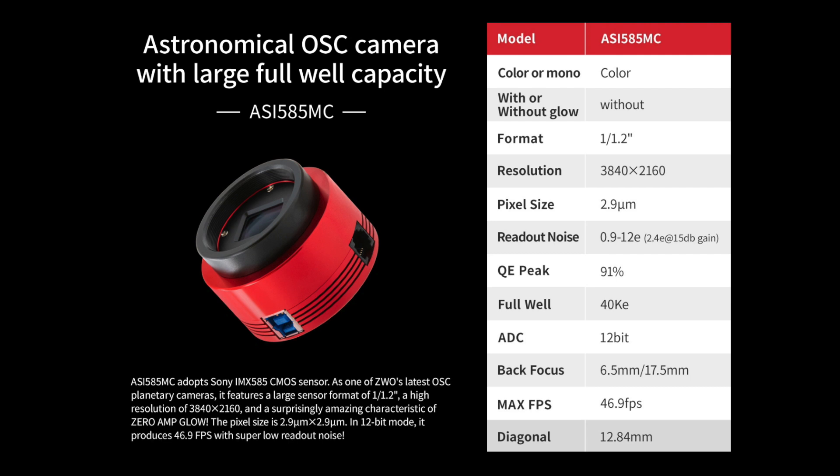I used my new ASI 585MC one-shot color camera. On this warm night, the sensor was constantly between 32 and 34 degrees centigrade all night long. So dark and bias frames and dithering was essential to minimize thermal background noise.